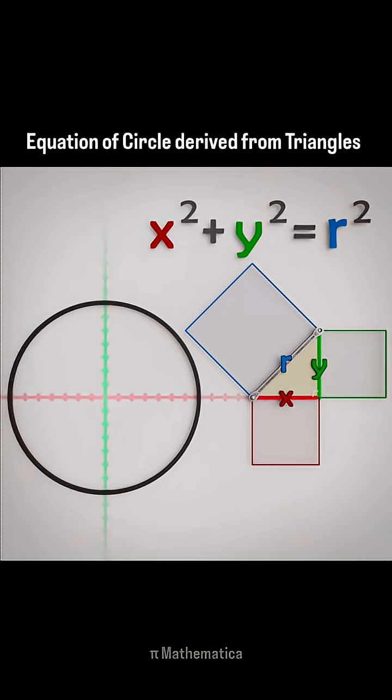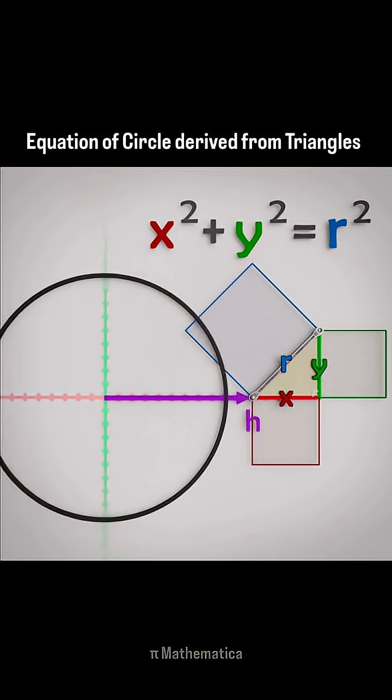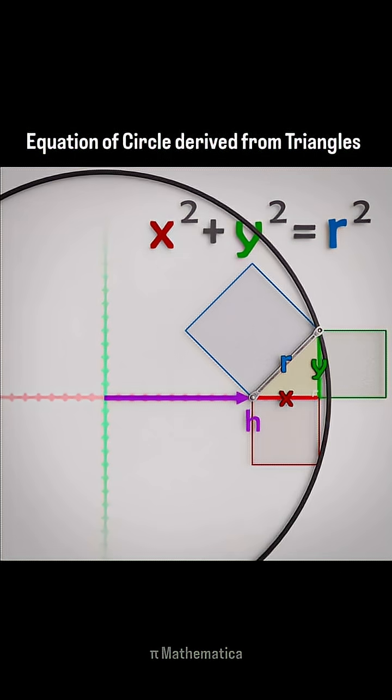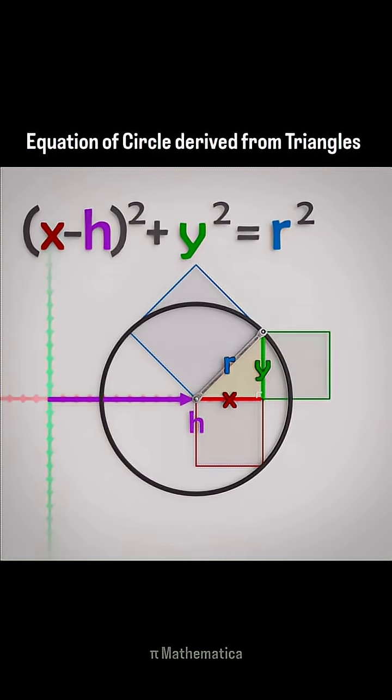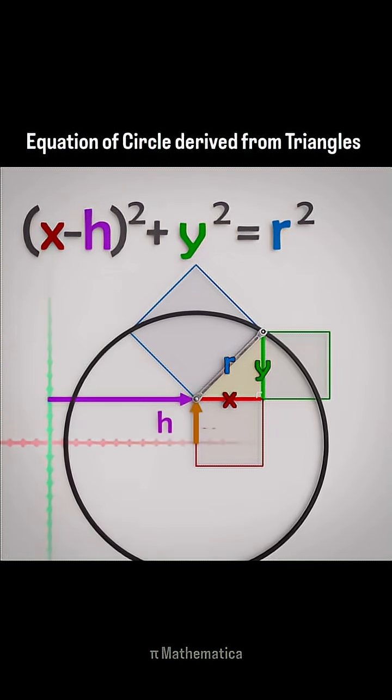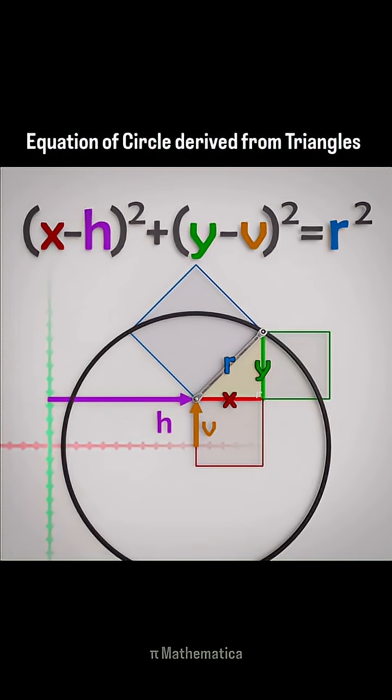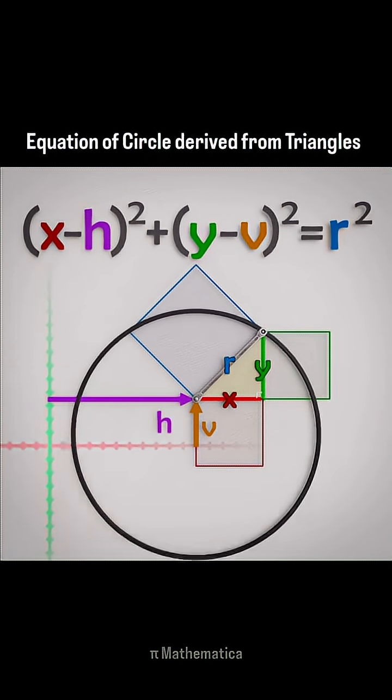If we offset the center a certain distance to the right, we have to make sure the pattern doesn't mistakenly describe a circle with a bigger radius. So we have to subtract that offset amount from our x-location to keep the relationship in balance. If we shift the center up vertically, we'd have to subtract that offset amount from our y-location to maintain balance.